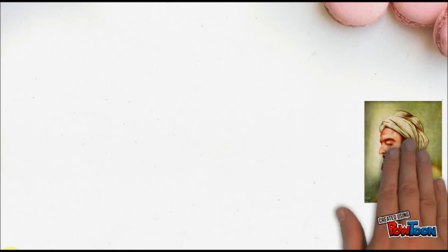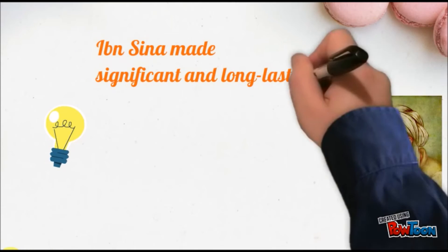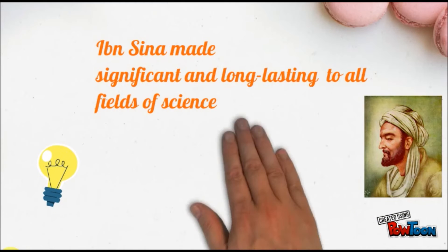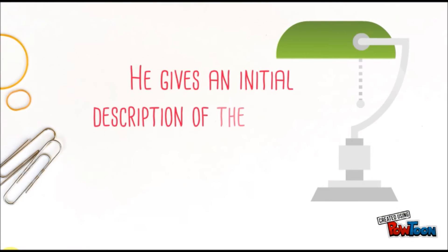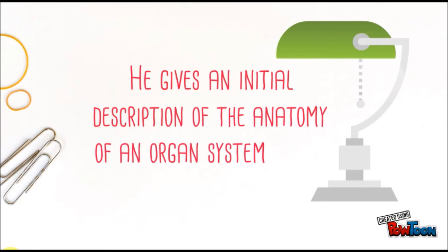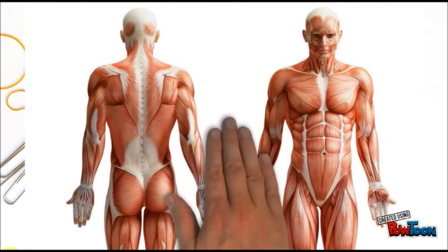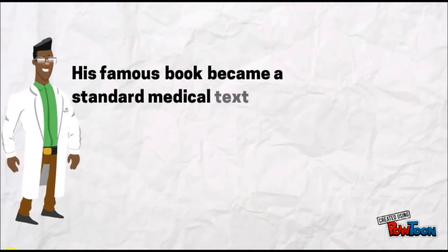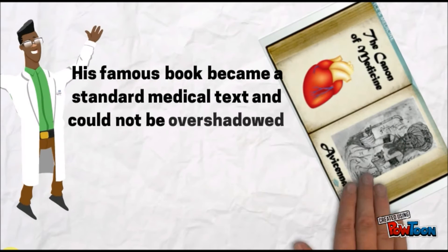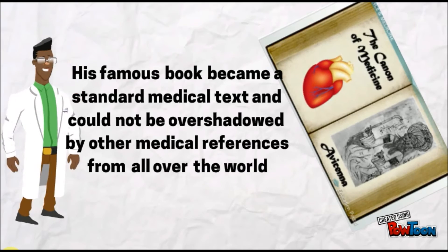As a conclusion, Ibn Sina made significant and long-lasting contributions to almost all fields of science. He gave an initial description of the anatomy of an organ system before discussing its diseases. His famous book, the Canon of Medicine, became a standard medical text and could not be overshadowed by other medical references from all over the world.